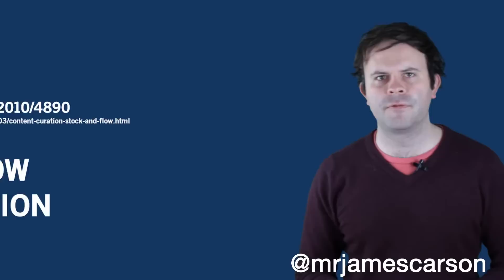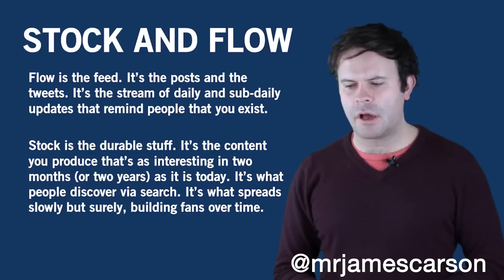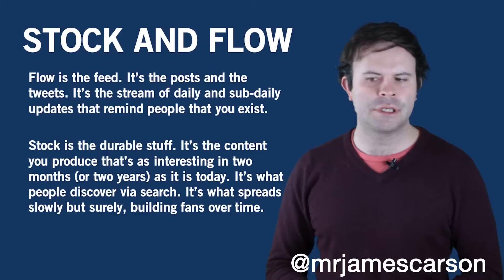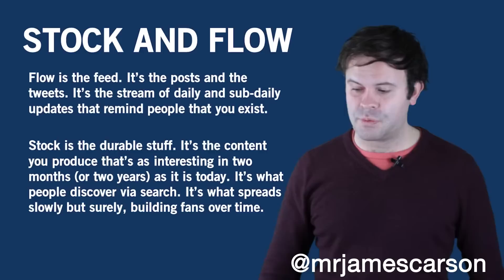Number four is a planning technique called Stock, Flow and Curation. Flow is the feed — it's the posts and the tweets, the stream of daily and sub-daily updates that remind people that you exist. Stock is the durable stuff — the content you produce that's as interesting in two months or two years as it is today. It's what people discover via search, and what spreads slowly but surely, building fans over time.